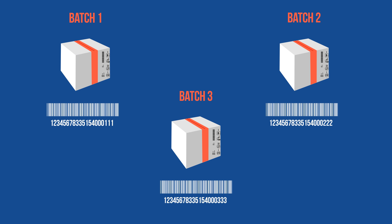If a company manufactures multiple batches of the same device, the DI for each batch will be the same, but the PI will be different.